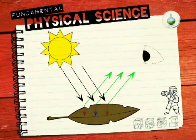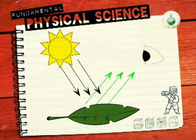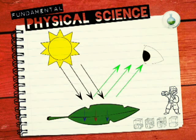Opaque objects have colour but do not allow light to pass through them. They have colour because they selectively absorb certain wavelengths of white light, whereas others are reflected — and the reflected light gives the object its colour. For example, a green leaf is green because the leaf absorbs all frequencies of white light except green, and so only green light is reflected and seen by the observer.